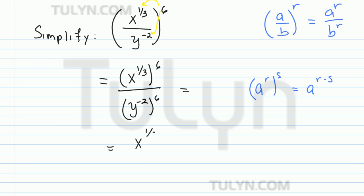We get x to the 1 third times 6 over y to the negative 2 times 6. And simplifying this, this is just multiplying numbers, which we're used to. So 6 times 1 third is x to the 6 thirds and then this becomes y to the negative 12.